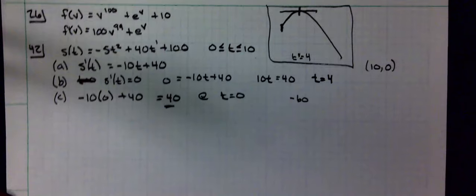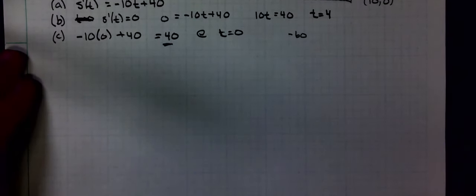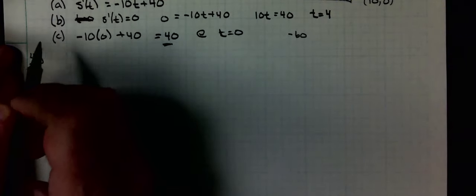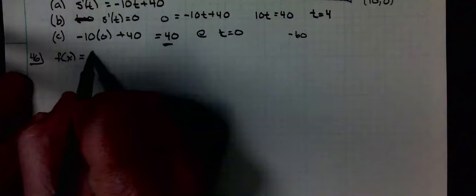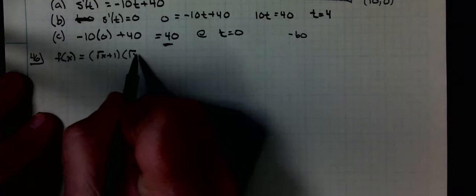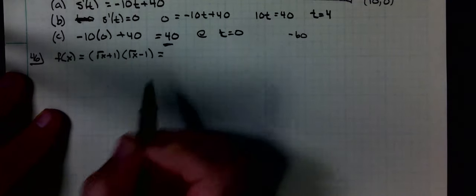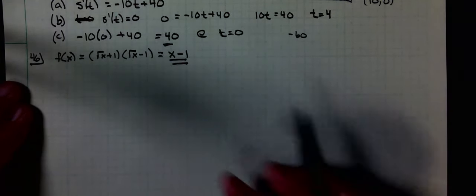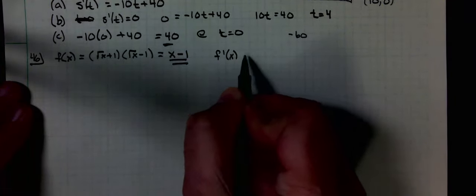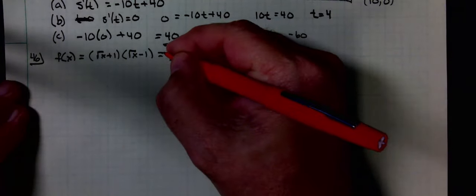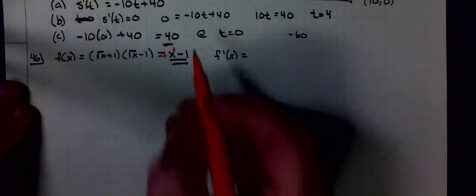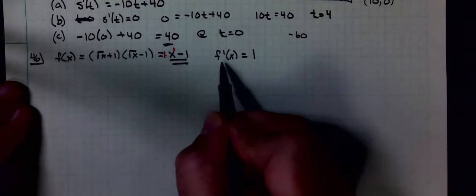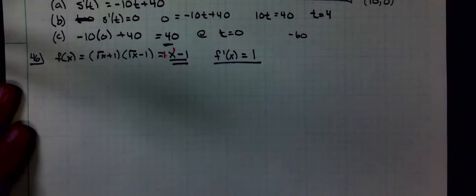For the last three problems: 46 says find the derivative by first expanding or simplifying. Problem 46 calls us f of x equals the third of x plus 1 times x minus 1. First thing we want to do is multiply this out. It's first term squared minus last term squared: x squared minus 1. This is what I'm taking the derivative of. f prime of x equals 2x. The derivative of negative 1 is zero. That is my answer.